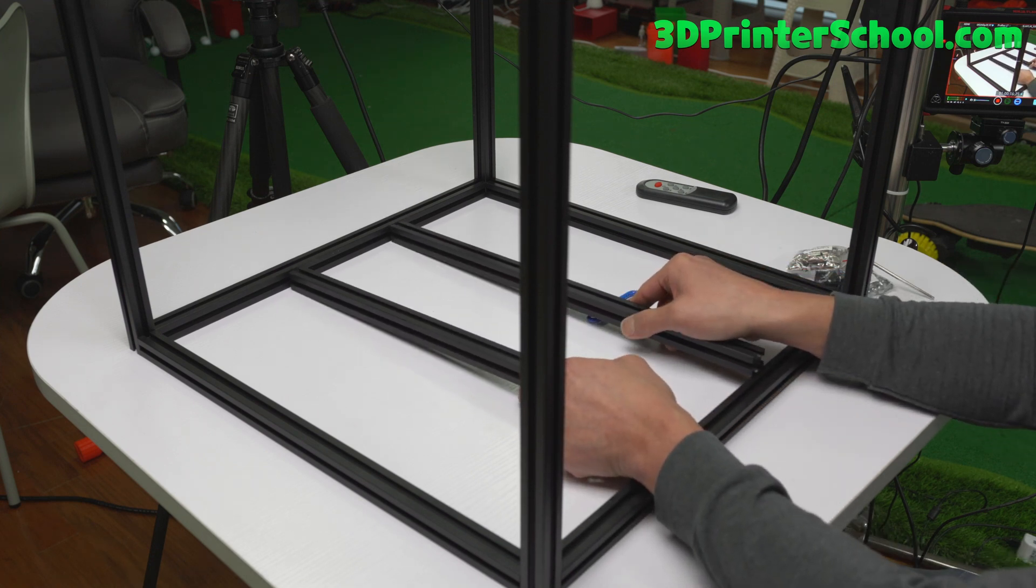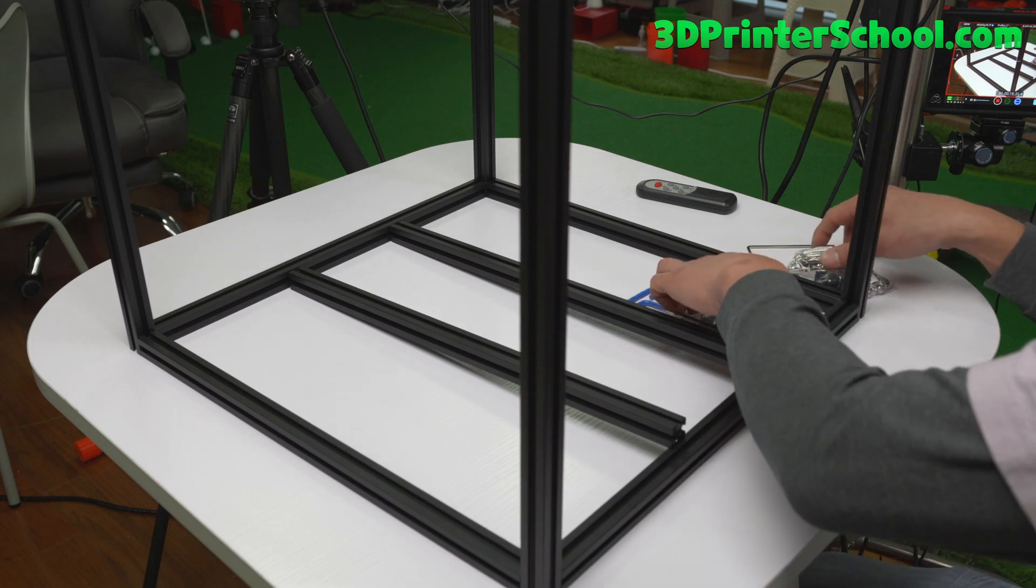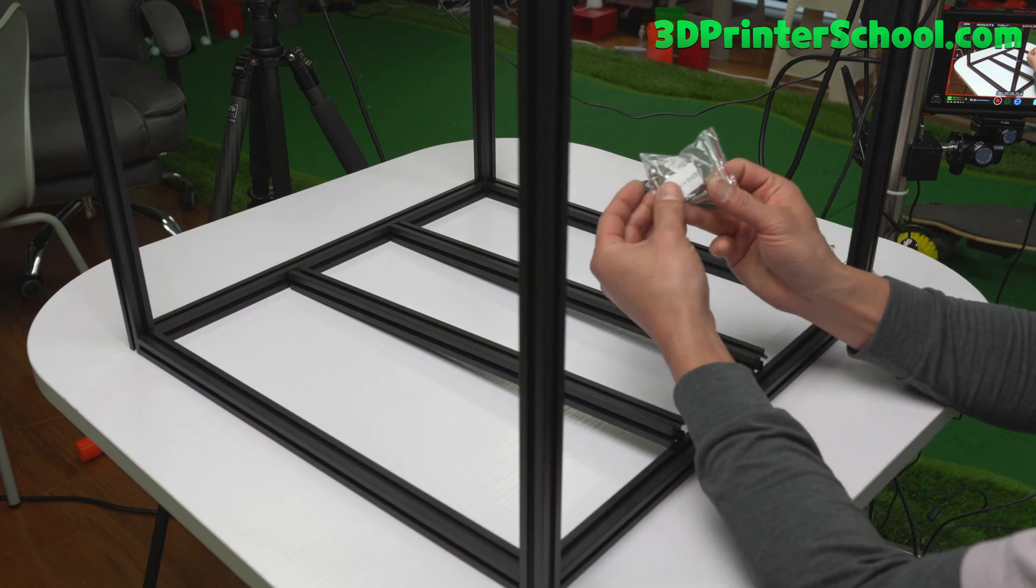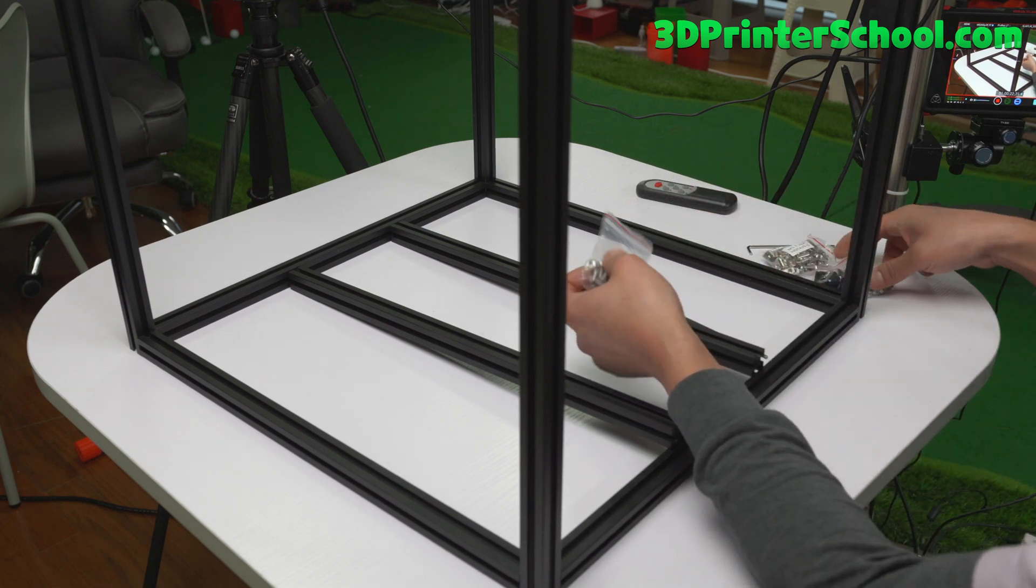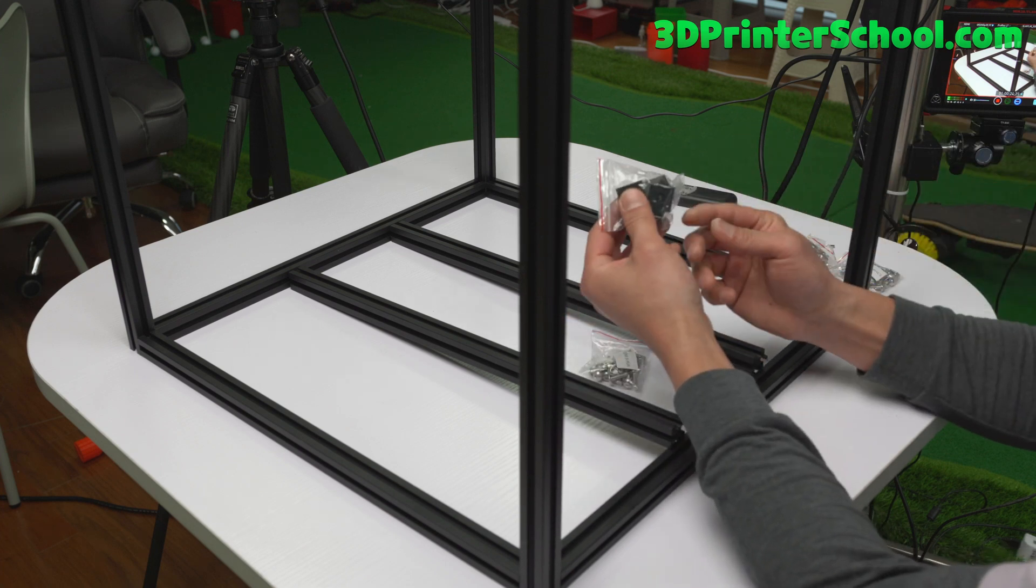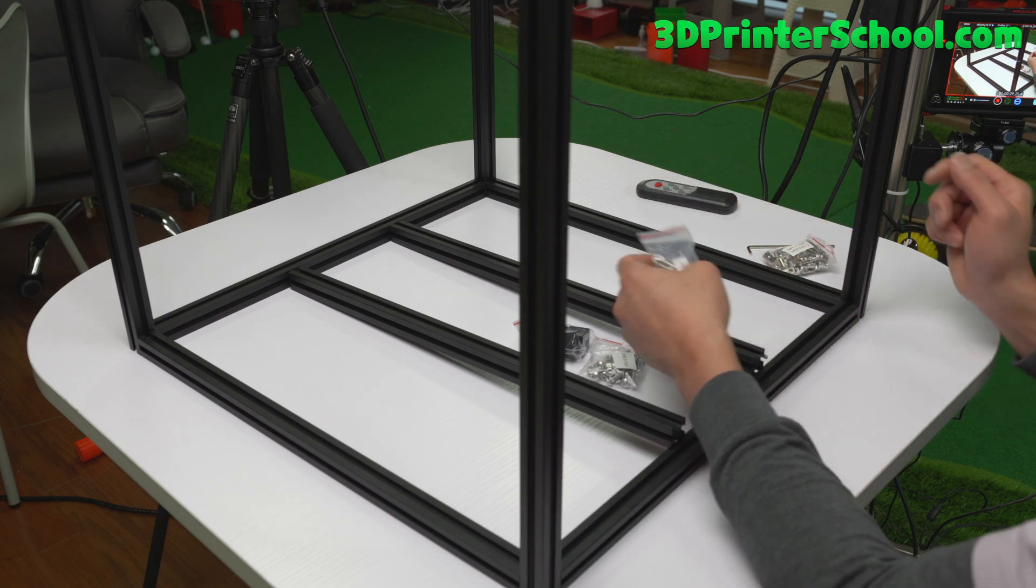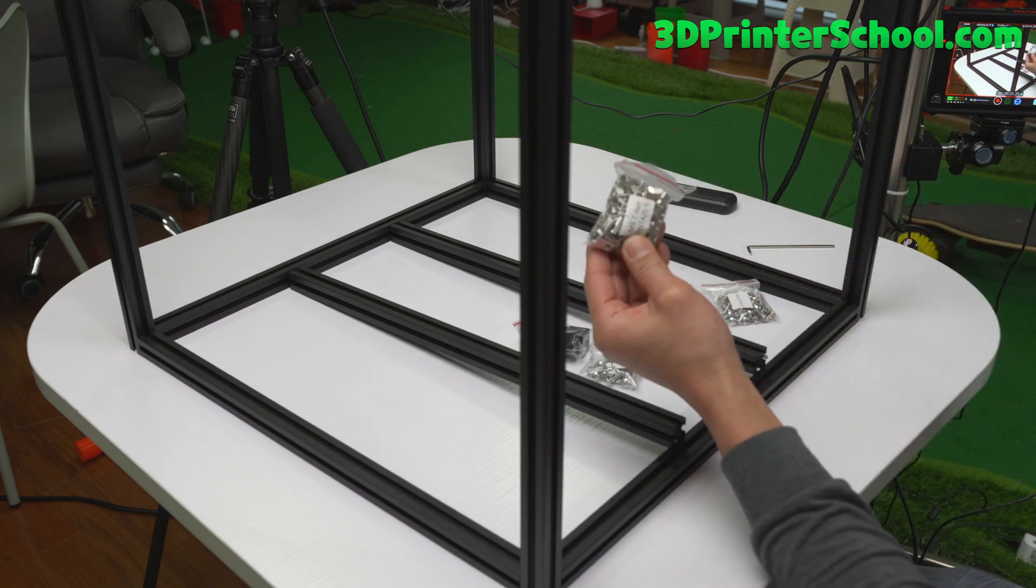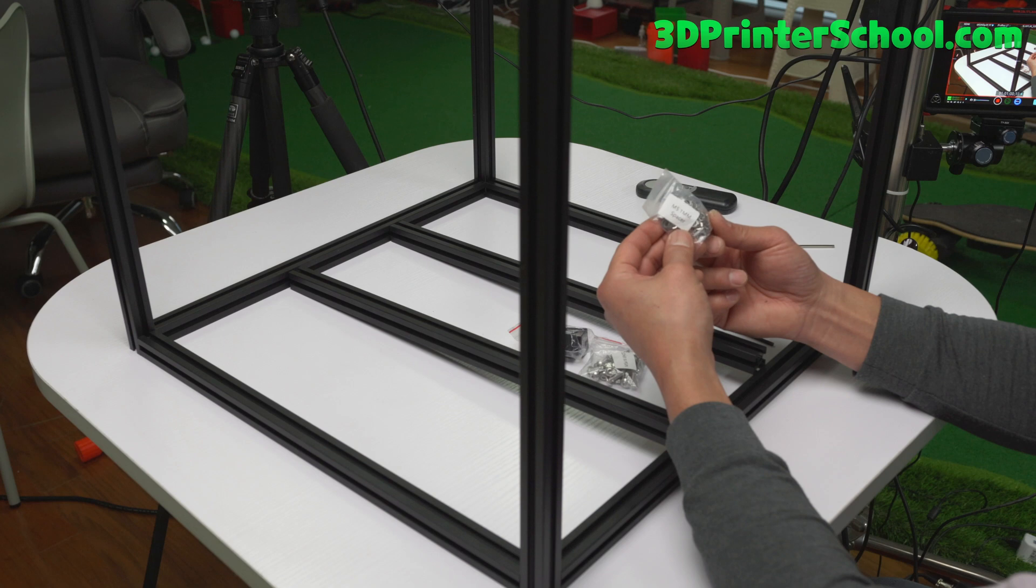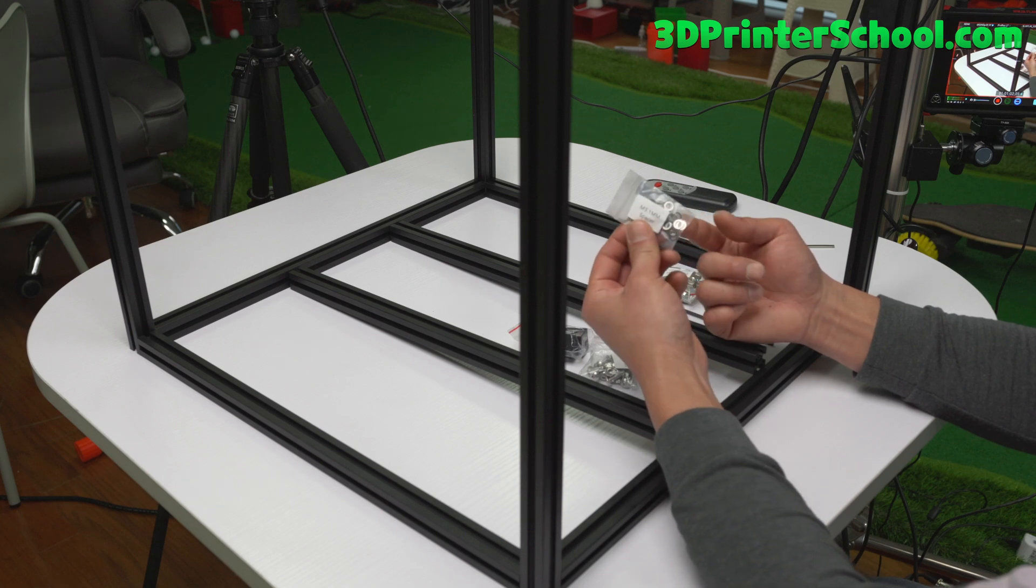This is where the bed will go on top. So all the stuff you'll need before you begin: you'll need an M5-16, and also you'll need the 90 degree angles. Also you'll need the M5-10, also M5 T-nut, and you'll need a 1mm spacer, M5 1mm spacer.